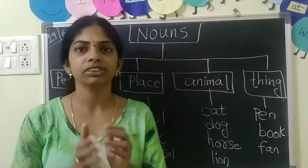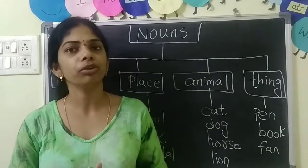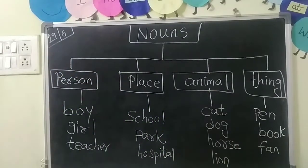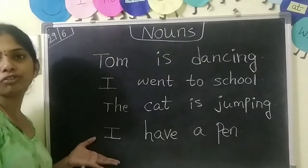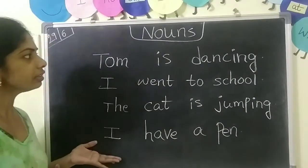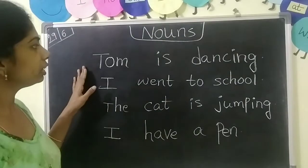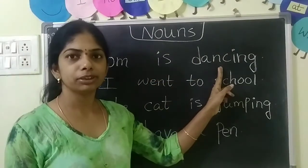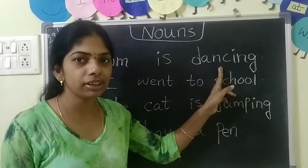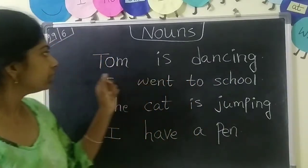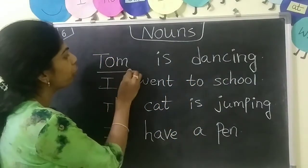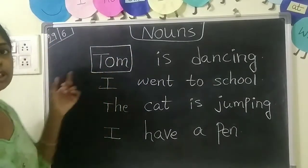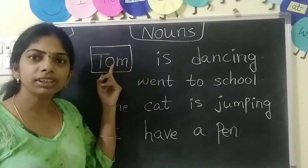Are you clear, children? So I will write some sentences on the board. You have to tell me what is the noun in each sentence. So here I wrote a few sentences — observe these sentences, children. What is the first one? Tom is dancing. Is there any person's name here? Yes — Tom is the boy's name, a person's name. So it is a noun in this sentence.